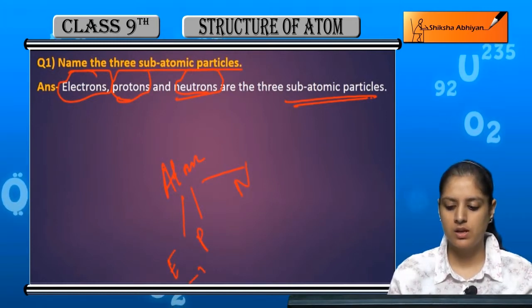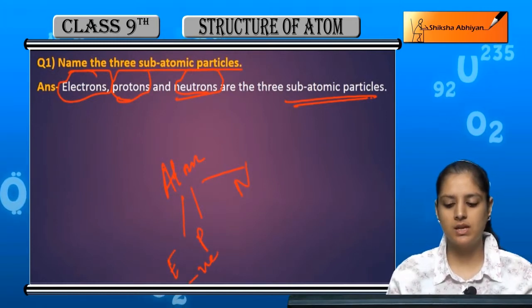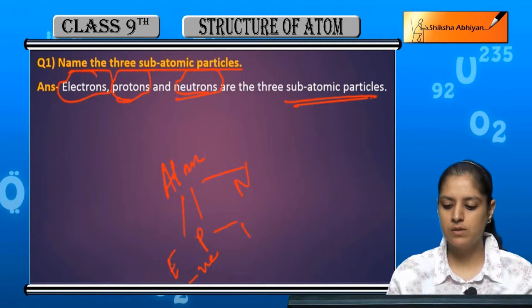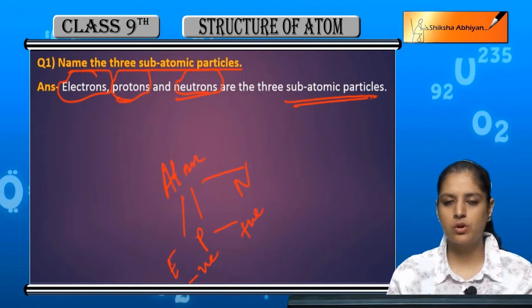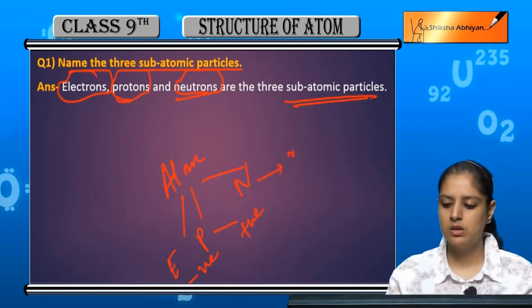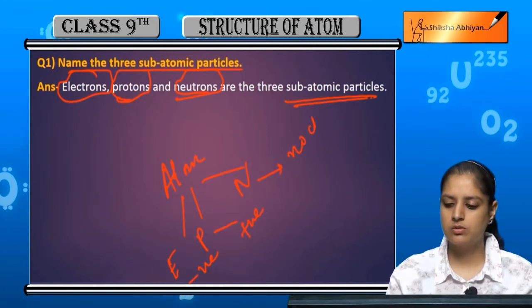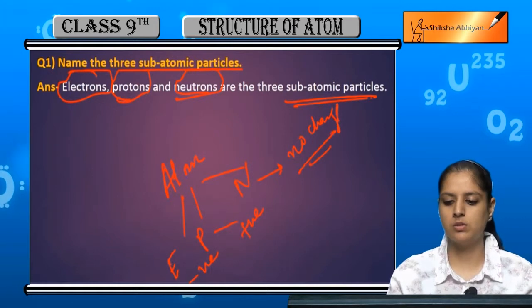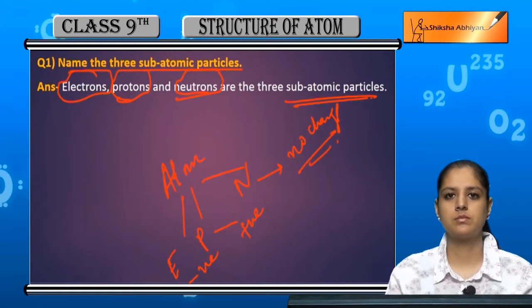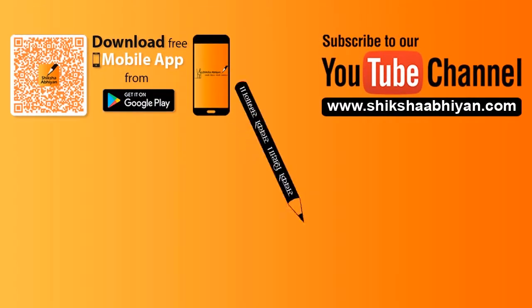Electrons negatively charged hoti hain, protons positively charged hoti hain, aur neutrons ka koi charge nahi hota.